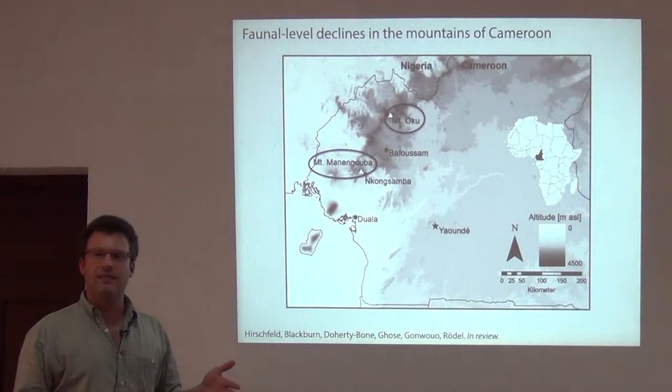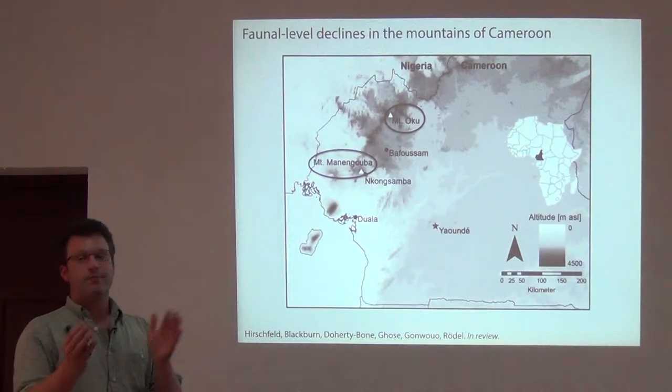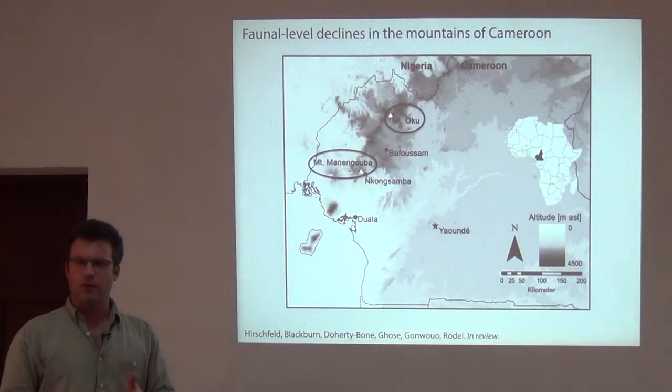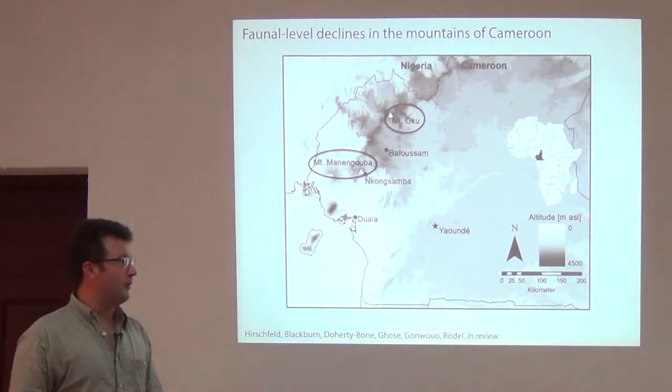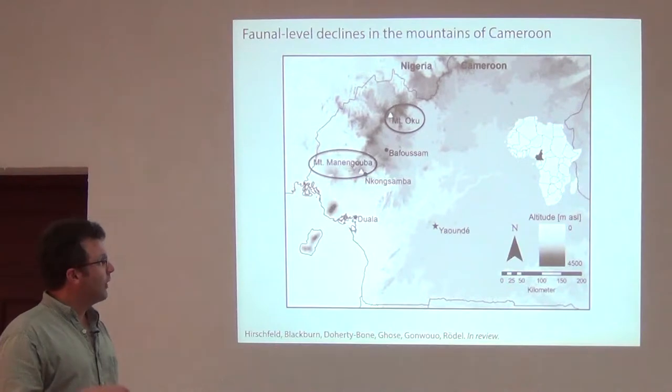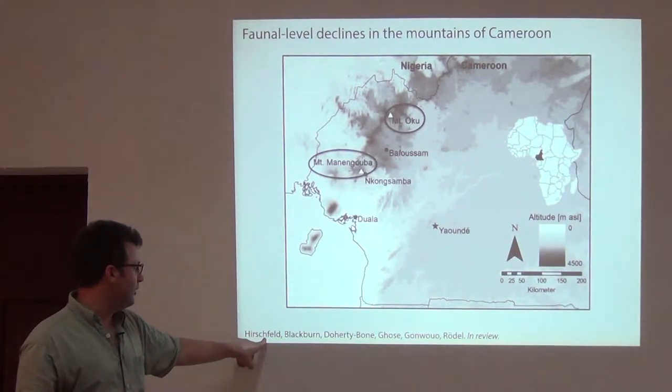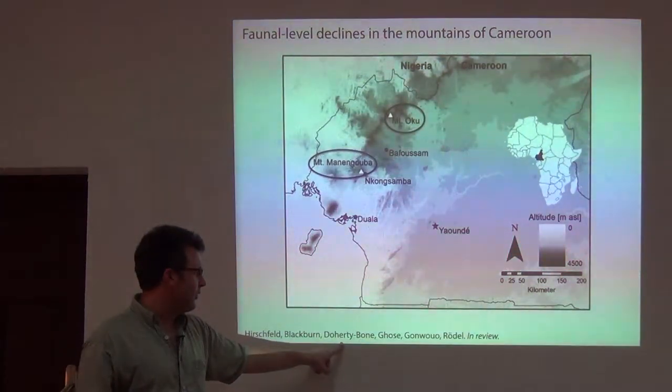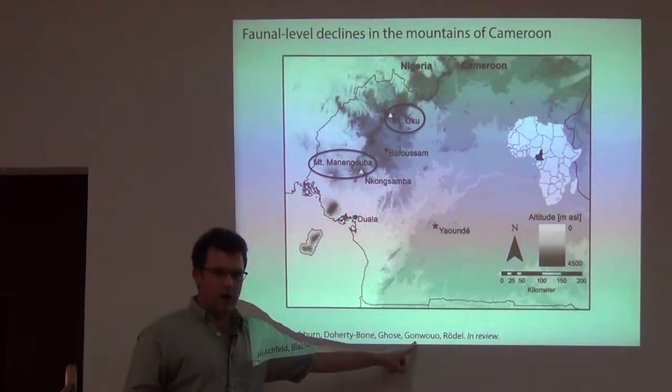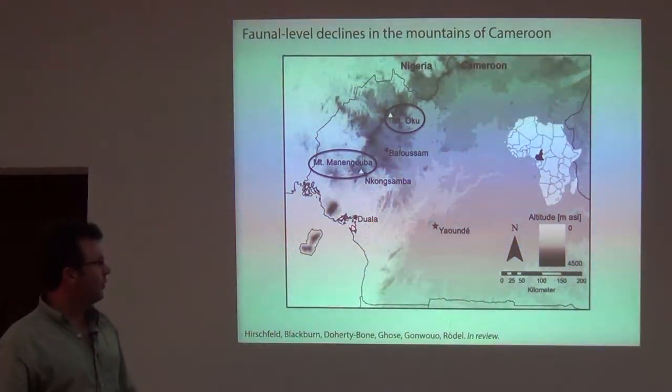We have a lot of information about these and we feel pretty confident about what species occur there. And including recently in the last ten years, from my work or from specimens that I've collected, I've described new species from these places too. So we're pretty reasonably confident that we know what species occur on these two mountains. And so all of what I'm going to show is a collaboration of field data that's pulled together from Marika Hirschfeld, who is a grad student in Germany, myself for my graduate student work, Tom Doherty-Bone, who's a graduate student in the UK, and Nono Ganwo, who Walter works with. And Nono's work on Mount Managuba played a big part of this work.